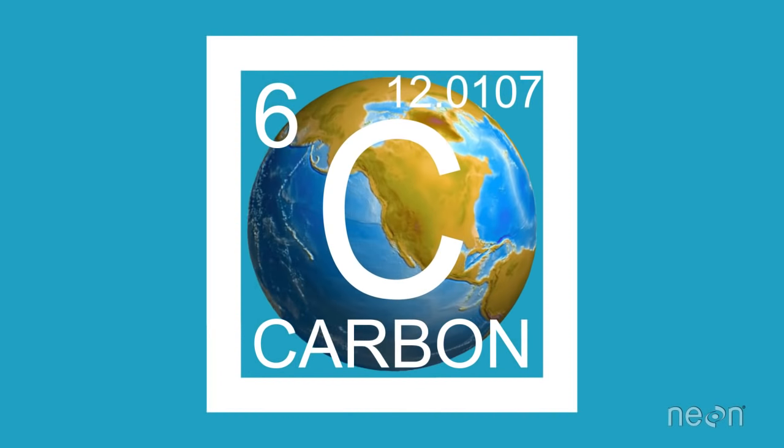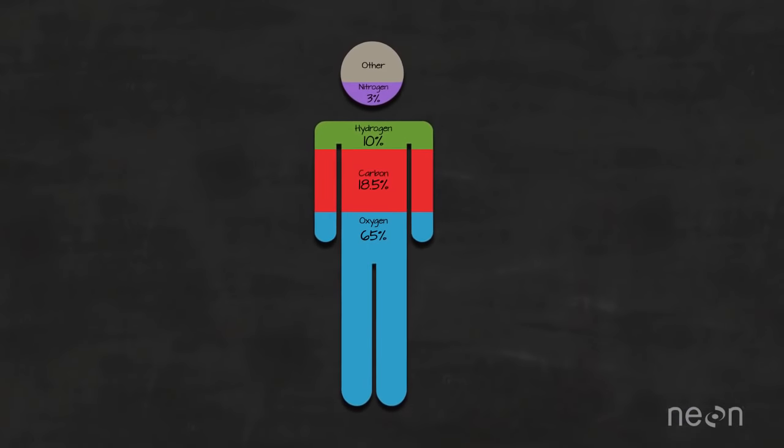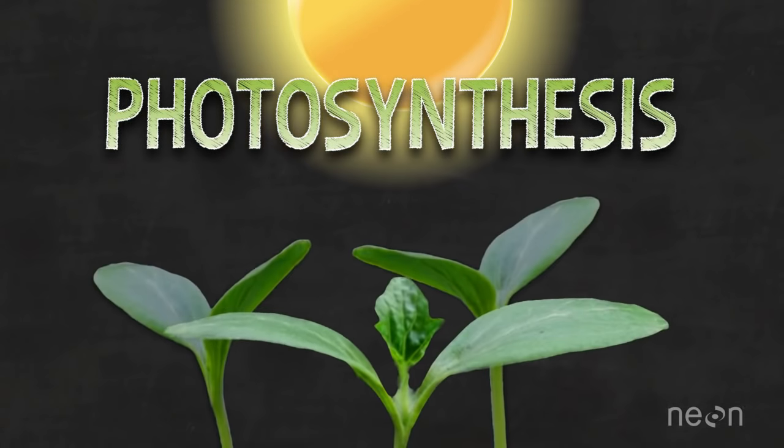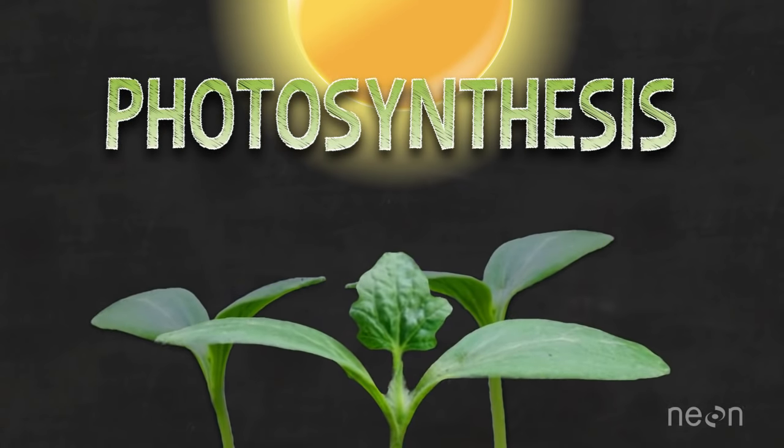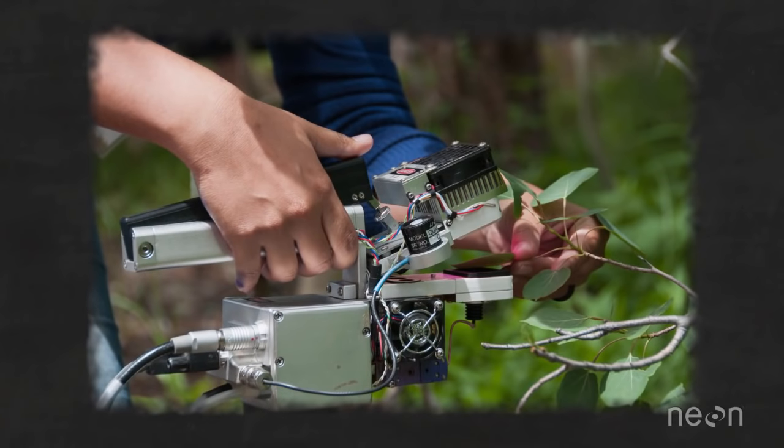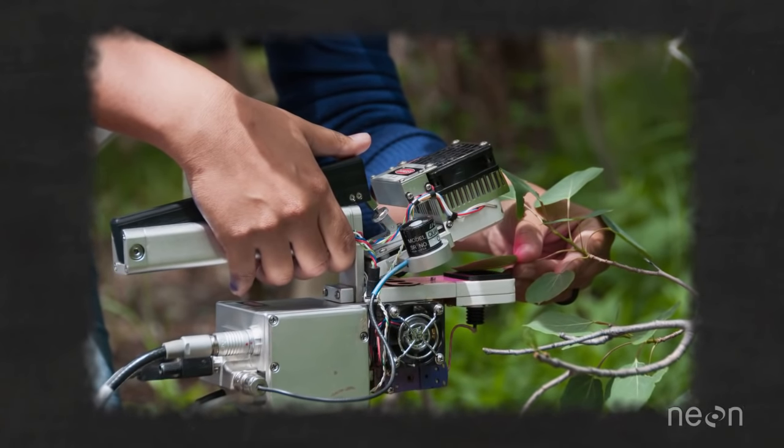Carbon supports life on Earth as we know it. In fact, we humans are 18.5% carbon. Our plant friends produce carbon through a process called photosynthesis. Through photosynthesis, plants provide that delicious oxygen that humans and other animals need and love. So understanding how much photosynthesis is happening tells us a lot about how healthy the plants are in an ecosystem.